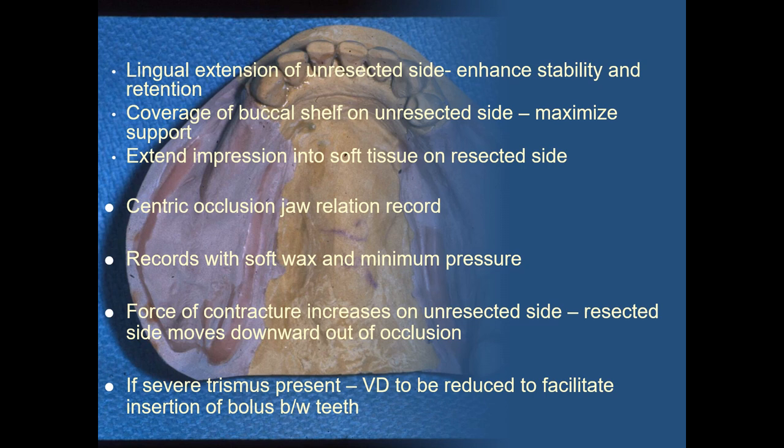After making the cast, the next step is jaw relation. A centric occlusion jaw relation record must be made with wax softened and under minimum pressure. The arc of closure is angular, meaning when the force of contracture on the unresected side increases, mandibular rotation in the frontal plane results in the resected side moving downward out of occlusion. This movement is impossible to correct but does not result in any deflective occlusal contact, and since mastication is performed on the non-resected side, this movement is expected and accepted. Teeth are selected based on the opposing dentition; aesthetics, occlusion, and speech are evaluated at try-in, and then the prosthesis is processed, polished, delivered, and adjusted, with the patient placed on a recall system.